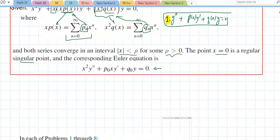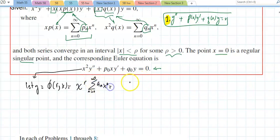If I let y equal some phi of r and x, that would be x to the r times the series n equals 0 to infinity, a sub n x to the n, which is the series n equals 0 to infinity, a sub n, if I multiply those two, that's x raised to the n plus r, where a sub 0 does not equal 0. That's the initial value that you plug in. Then, the characteristic equation.